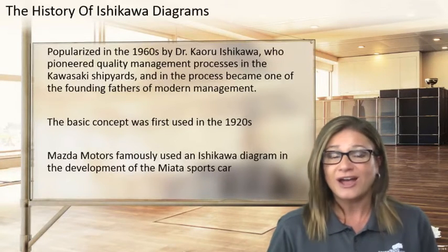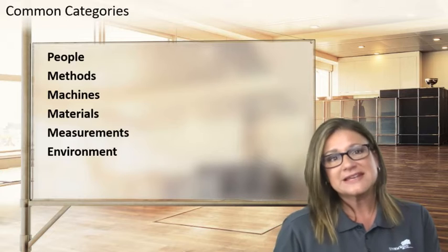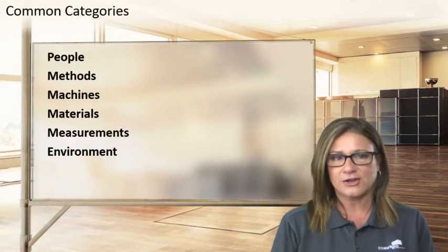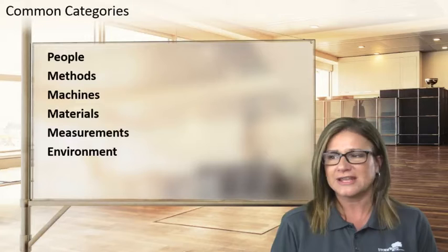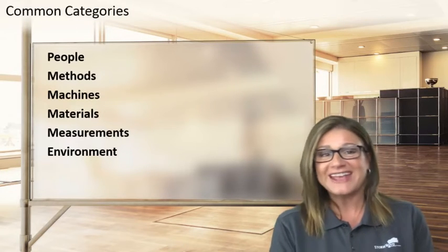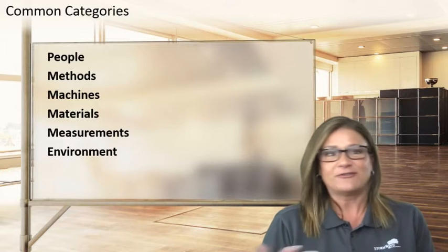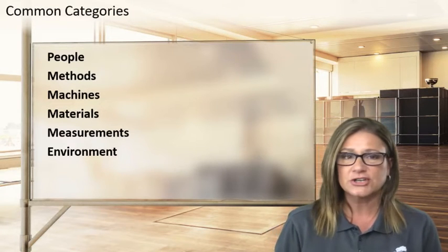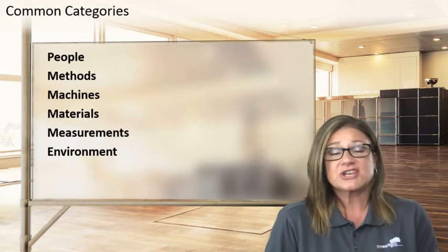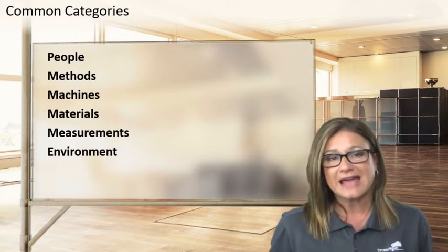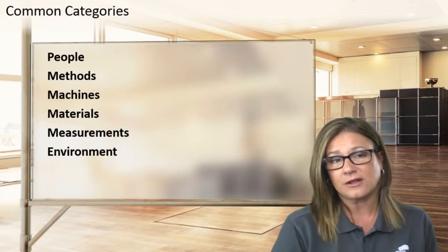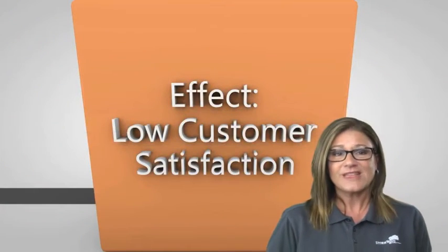Let's look at common categories of breakdown so you can compartmentalize and start looking for root causes. These are the most common, but they're not the end-all-be-all — they can vary by industry. Categories include: people creating defects or contributing to risk, the methods being used, machinery, materials, how we measure performance, and the environment. You can use any big categories that fit your industry to narrow down why a risk event could occur or a quality problem has occurred.